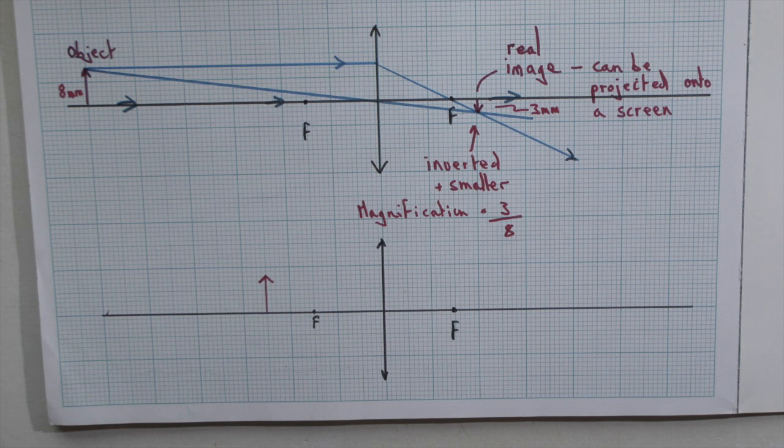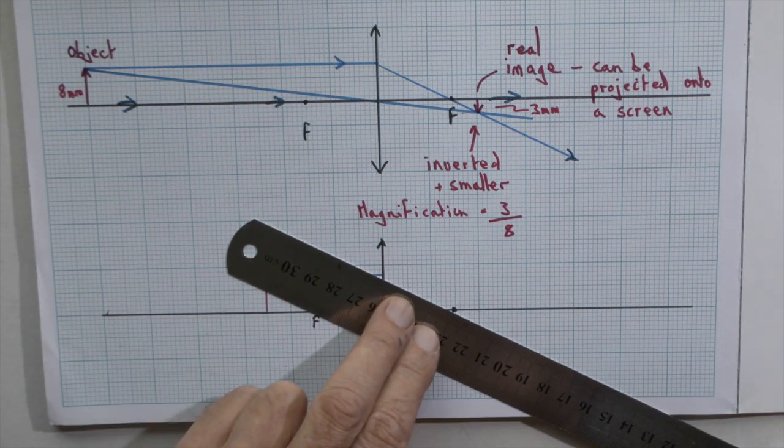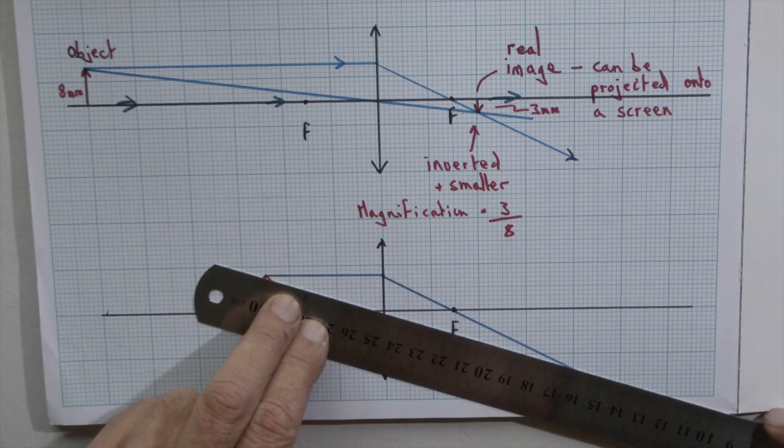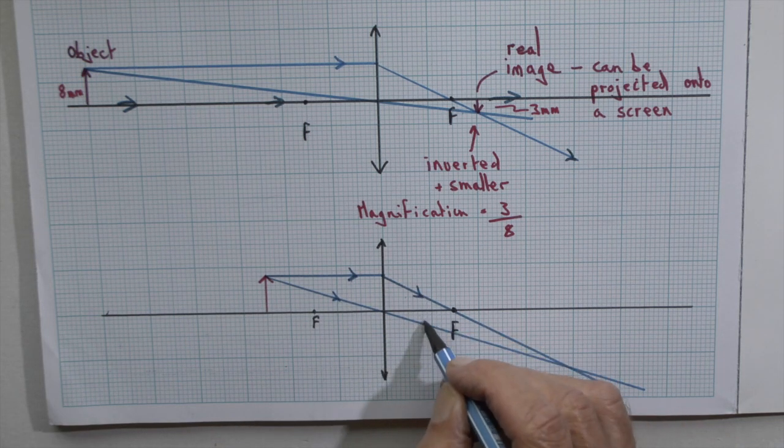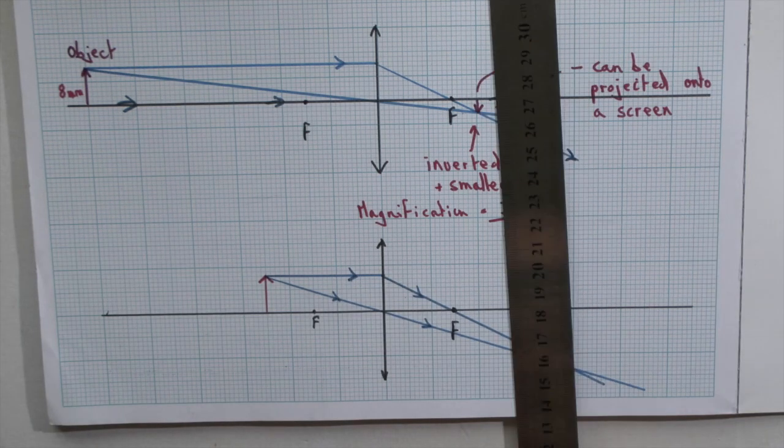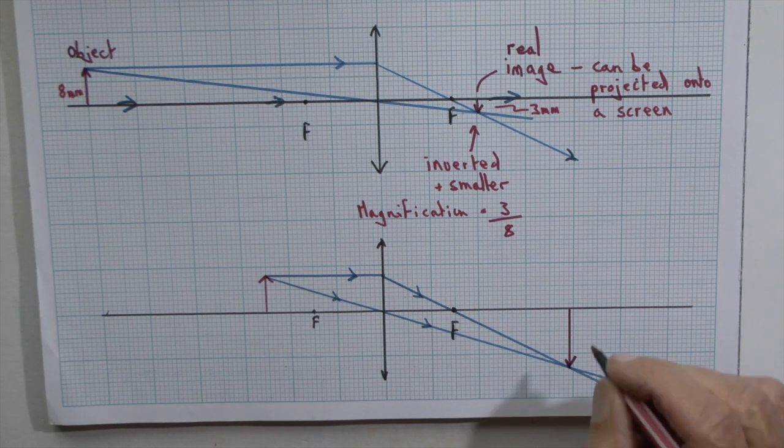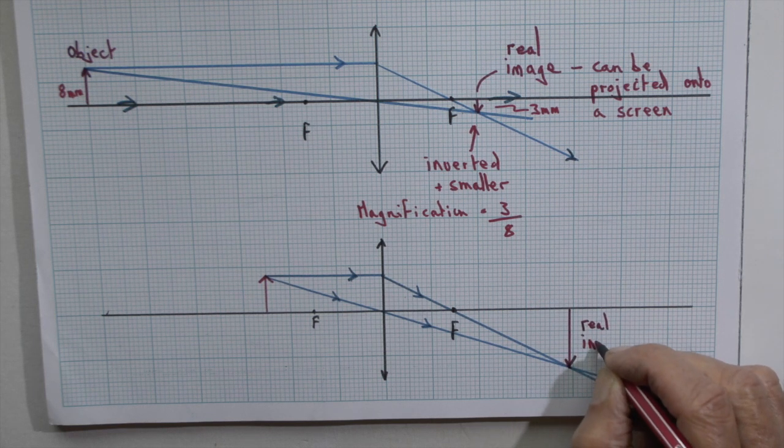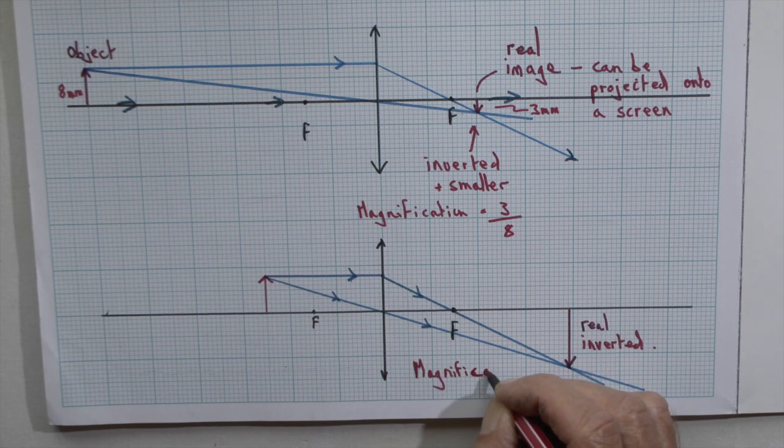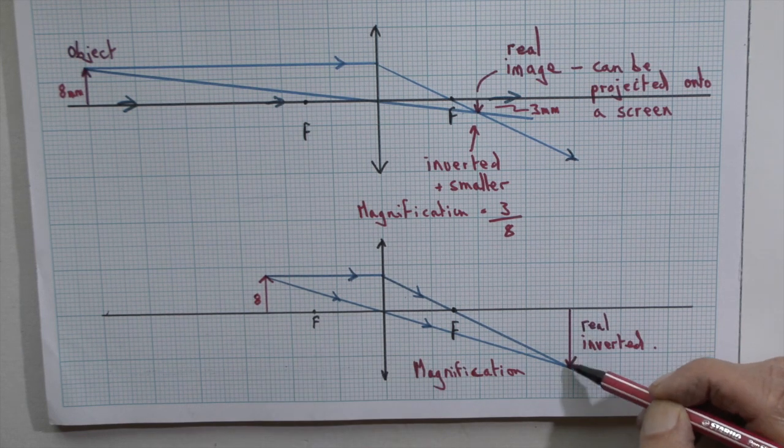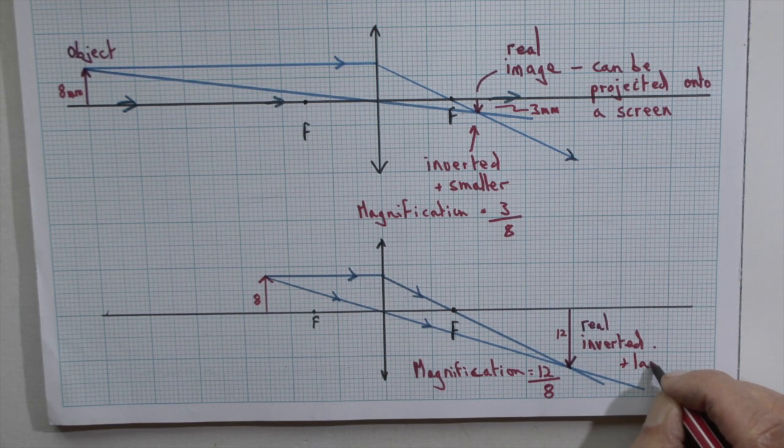Let's see the effect if we move the object much closer to the lens. On my scale, 25cm from the lens. Again, a ray of light parallel to the principal axis is refracted through the focal point. A ray of light passing straight through the centre of the lens is unrefracted. They cross further away from the lens and the image again inverted but is larger than the original object. Calculating the magnification, the original object was 8mm tall and looking at the diagram, the real image is 12mm tall. So 12 divided by 8 is a magnification of 1.5.